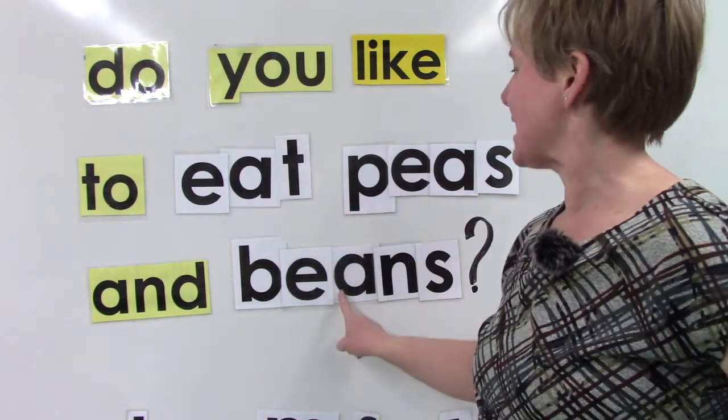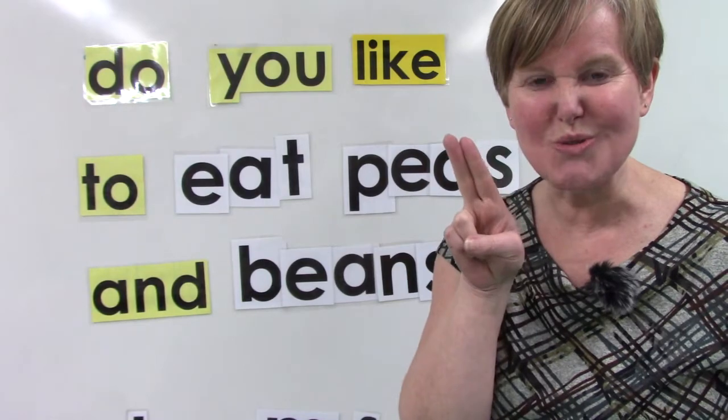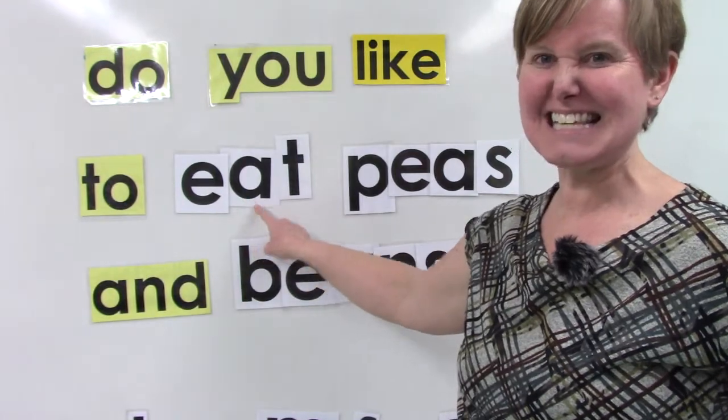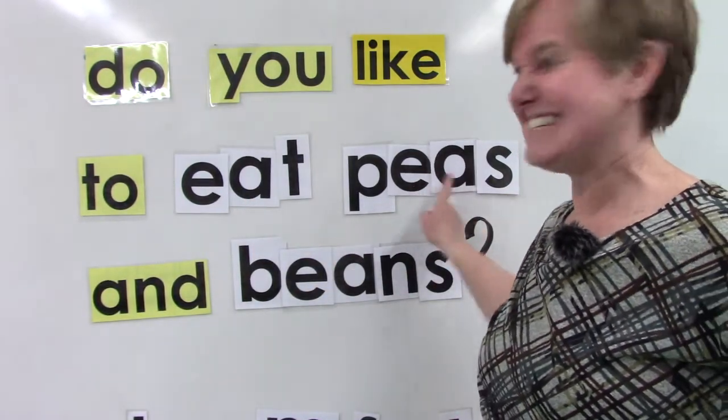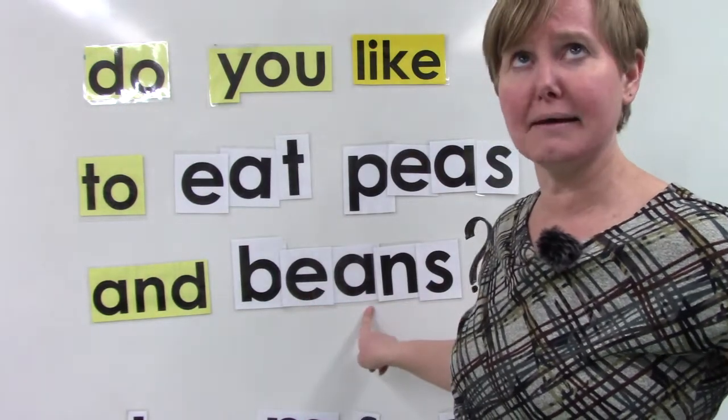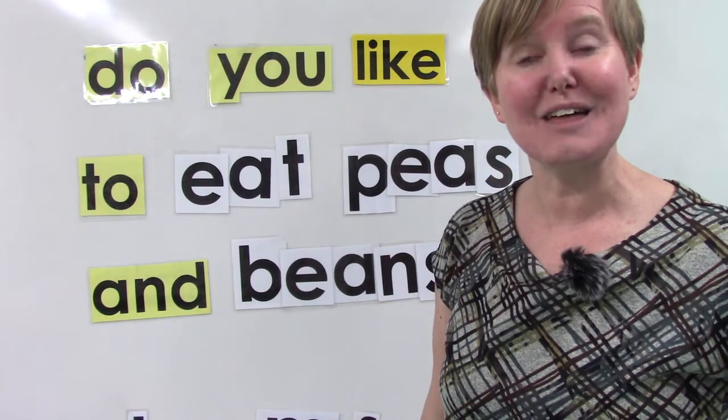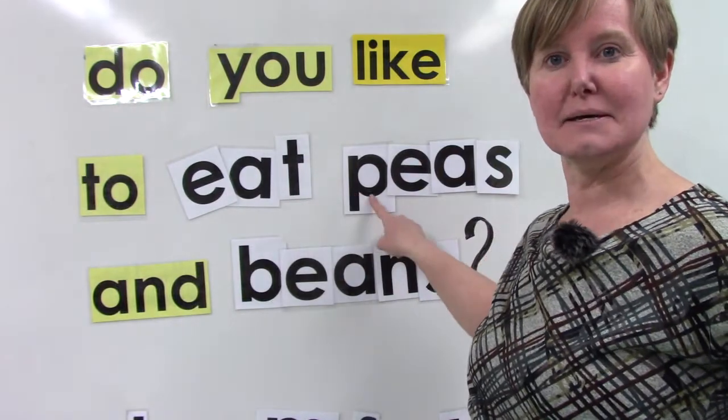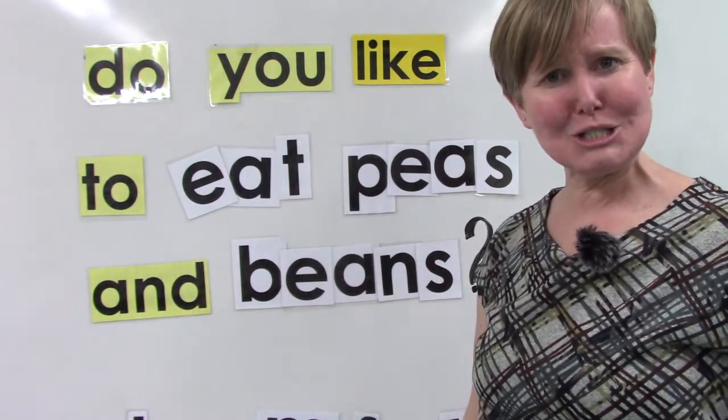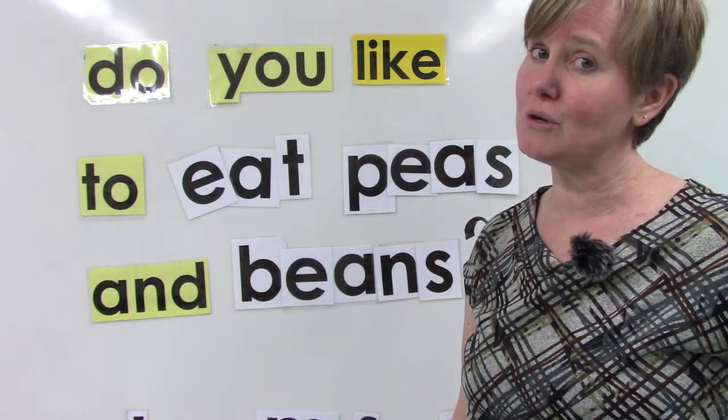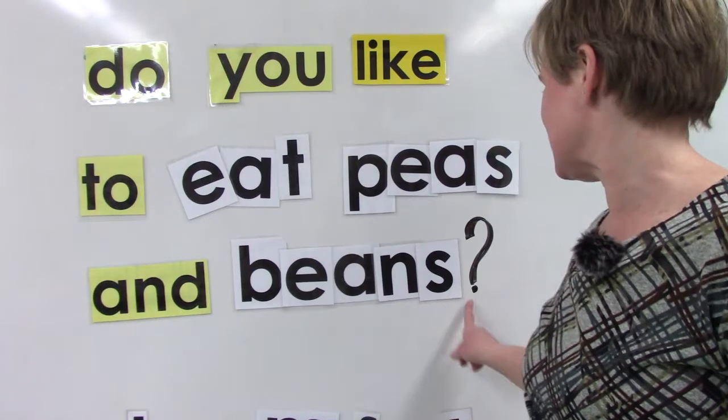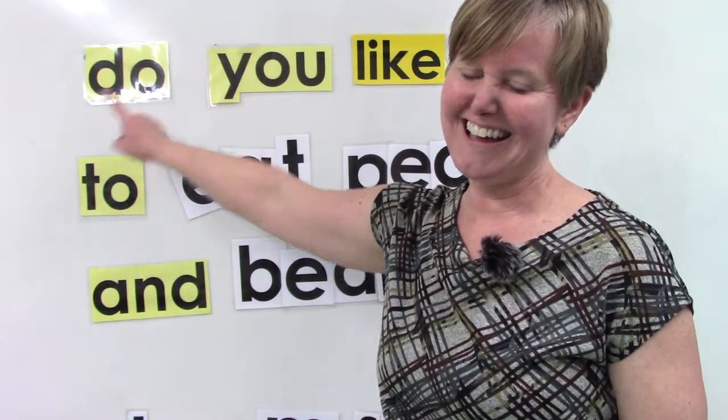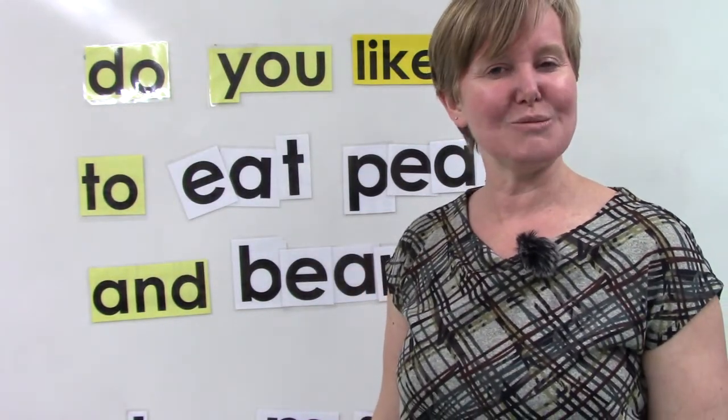The word eat, peas, and beans all have two vowels in them. They're walking together. The e says its name and the next is silent. The e says its name and the a is silent. The e says its name and the a is silent. Please read this together with me. Do you like to eat peas and beans? Do you? It's very good for you to eat your vegetables. You'll notice that my sentence ends with a question mark because it's a question. Oh dear, but what's wrong up here? It needs a capital letter. I knew that you would notice.